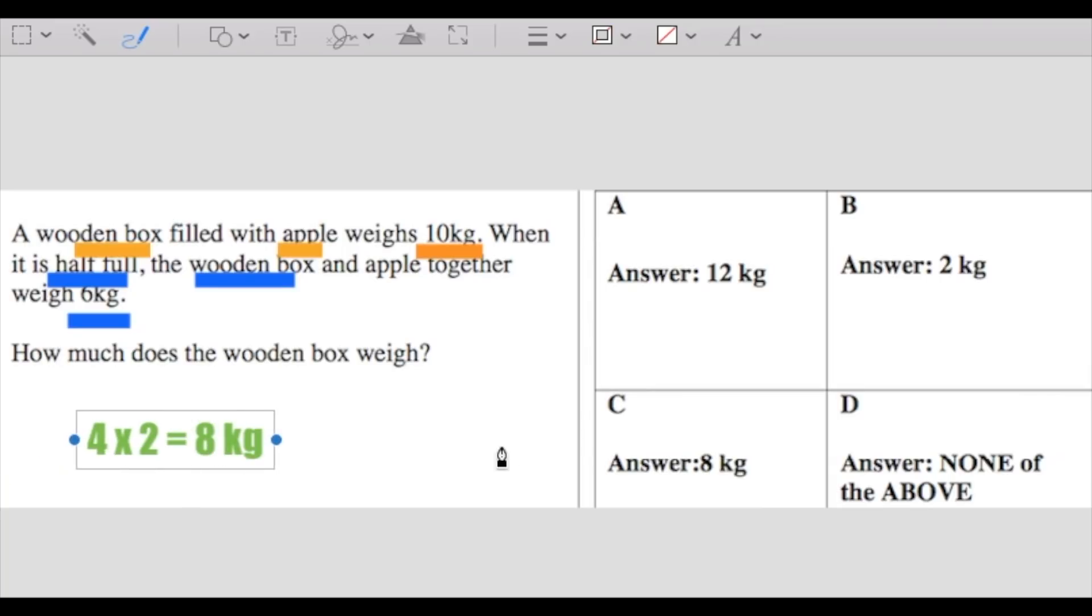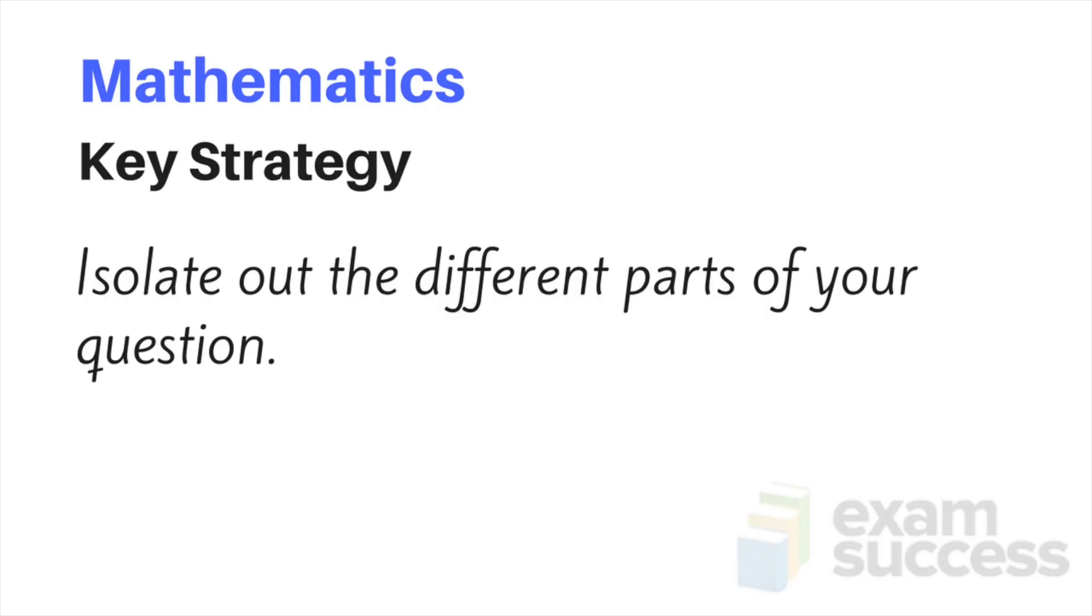But is that the question being asked? Should we go and then circle this? No. Why? Because it asks us the wooden box. How much does the wooden box weigh? In this case, when you've got 10 kilos being the wooden box and the full apples, we know the full apples is eight kilograms, the wooden box should be the difference. So 10 kilograms take away eight kilograms is two kilograms. Key strategy for mathematics: isolate out the different parts of your question so that you can answer them well.